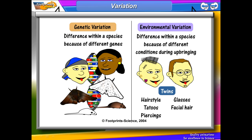Environmental variation is due to the conditions that an organism has lived in. An example in humans might be piercings, hair colour, or hair style. But what we are really interested in is genetic variation, because genetic variation enables characteristics to be passed on to the next generation.